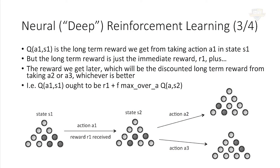What we know is that whatever the long-term reward is for taking that action in this state, it's related to the long-term reward you would get by taking the best possible move in the next state. Specifically, the long-term reward from this state is just the immediate reward you receive plus the long-term reward out of the next state if you make the best possible move. That's what that mathematical-looking expression is trying to tell you.